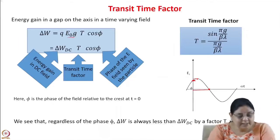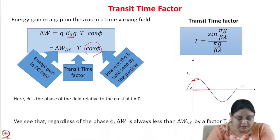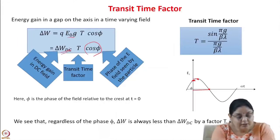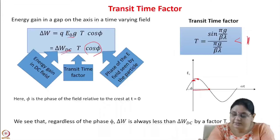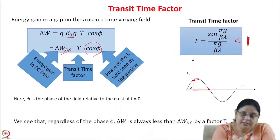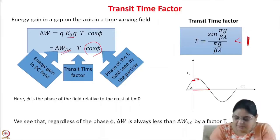Regardless of φ, taking φ = 0 so that cosφ = 1, the energy gain in a time varying field is always less than the energy gain in a DC field, because the transit time factor T is always less than 1. The function sin(x)/x is always less than 1, so regardless of the phase chosen, the total energy gain in the gap is always going to be less than the energy gain in a DC field, by a factor T.